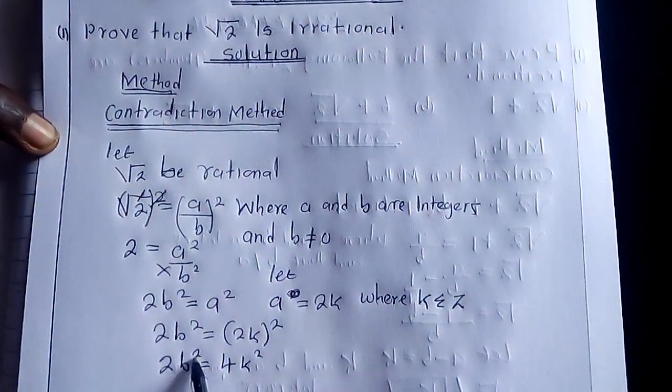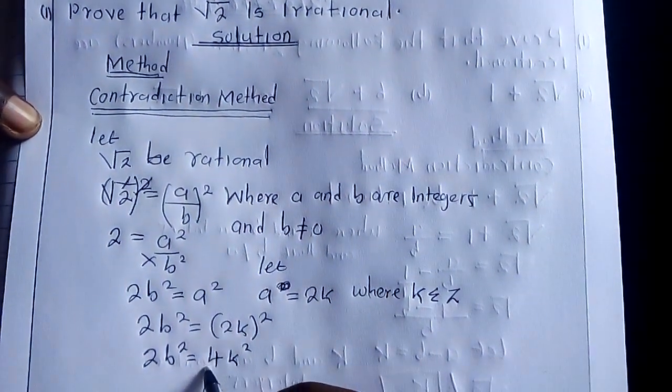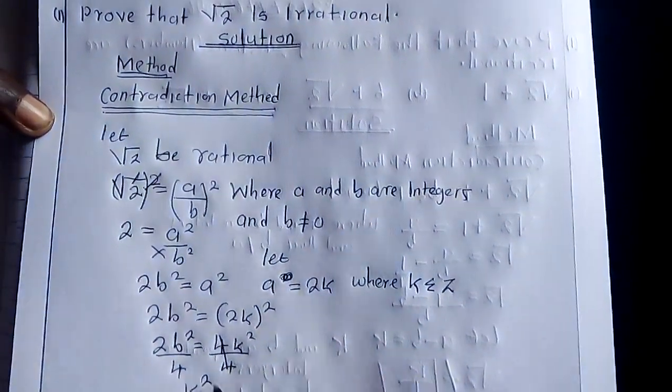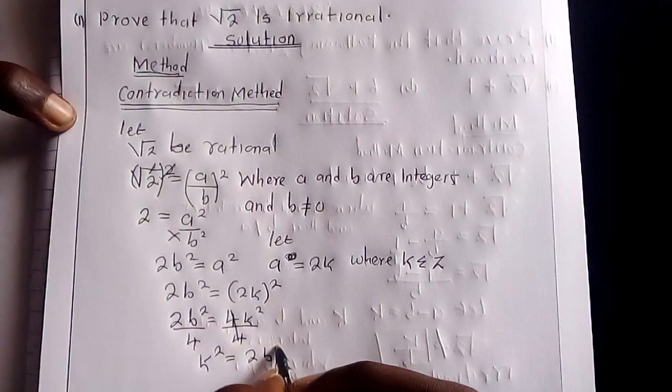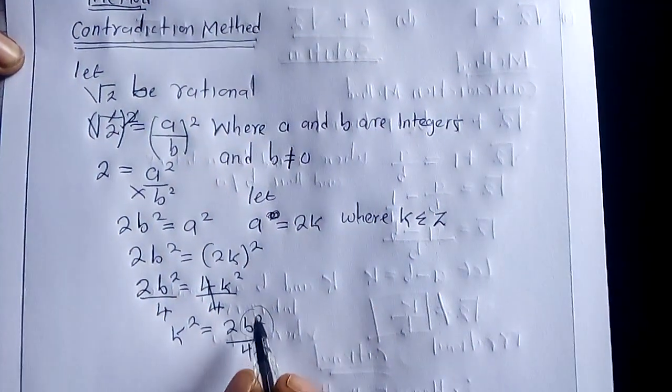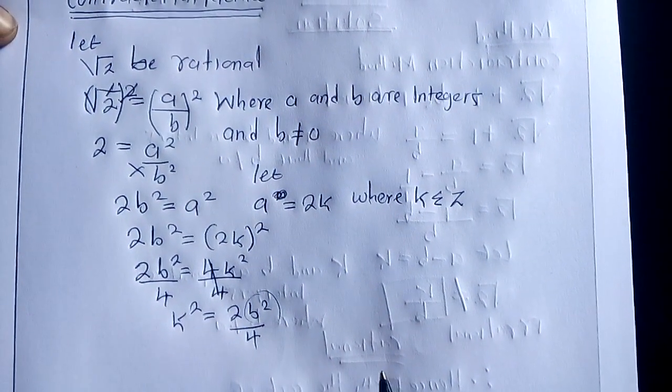Now notice, this is even, this is also an even number. So you are able to cancel this, and you are able to remain with K squared and 2B squared over 4. You discover that this is even, so whatever value that you are going to put there, you will still find some value, some number.